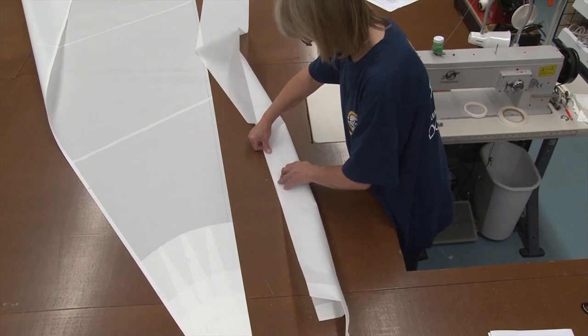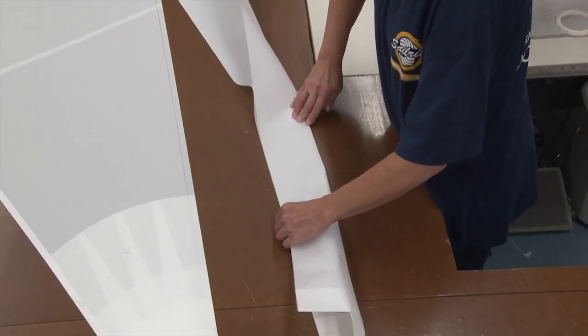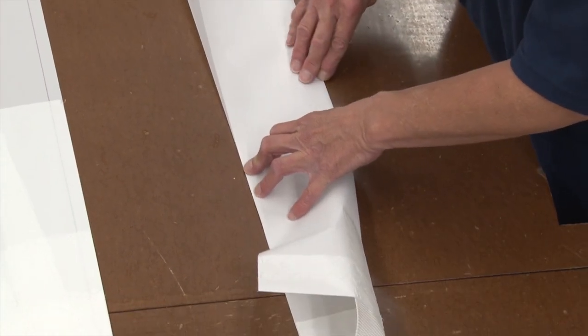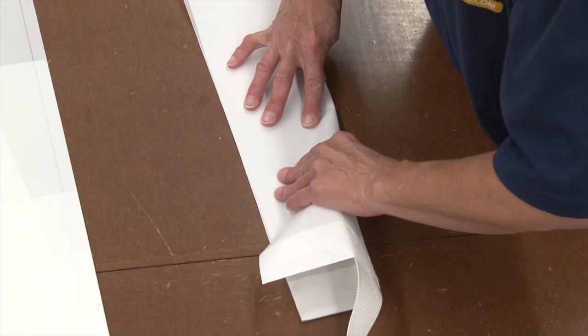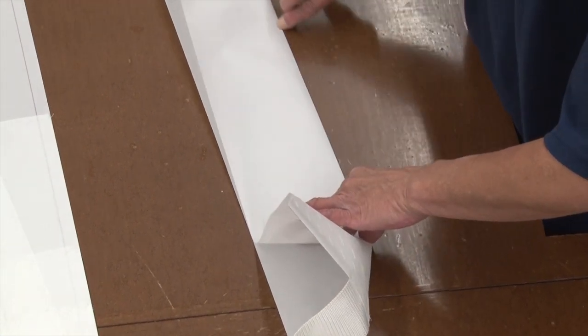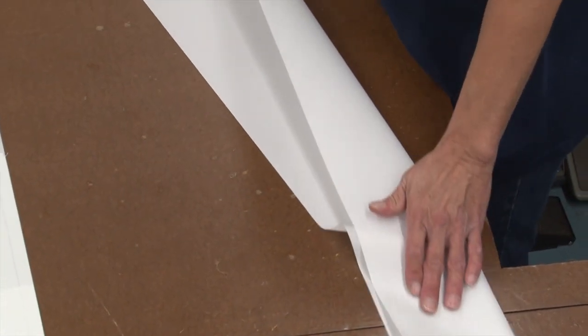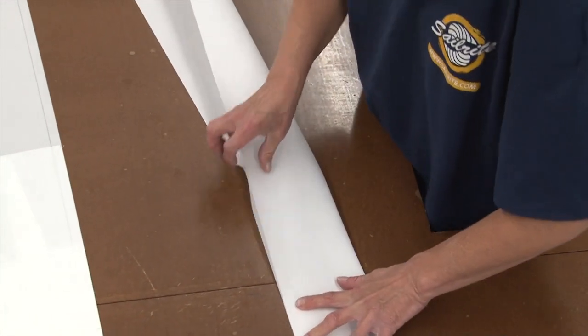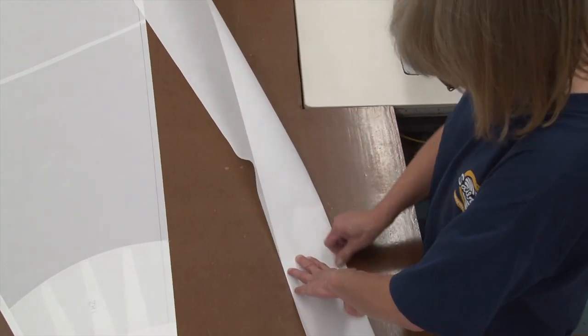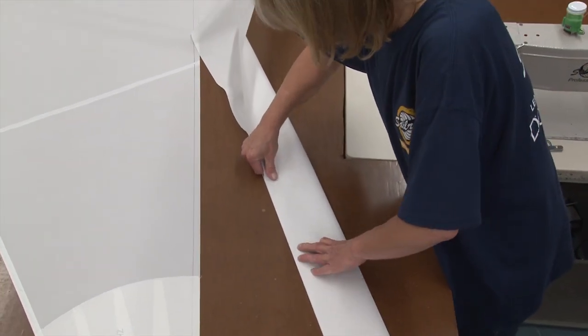Now we'll fold that material down the center all the way down its length. We want to fold our sleeves and crease the center. We'll just fold it in half and you can use scissors, you can use a thumbnail, anything, just put a crease right through the center of it all the way down to the bottom.